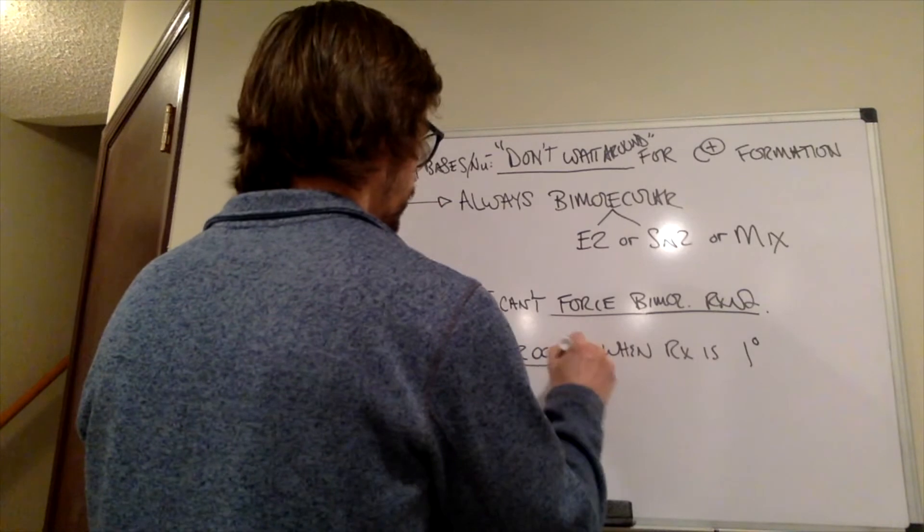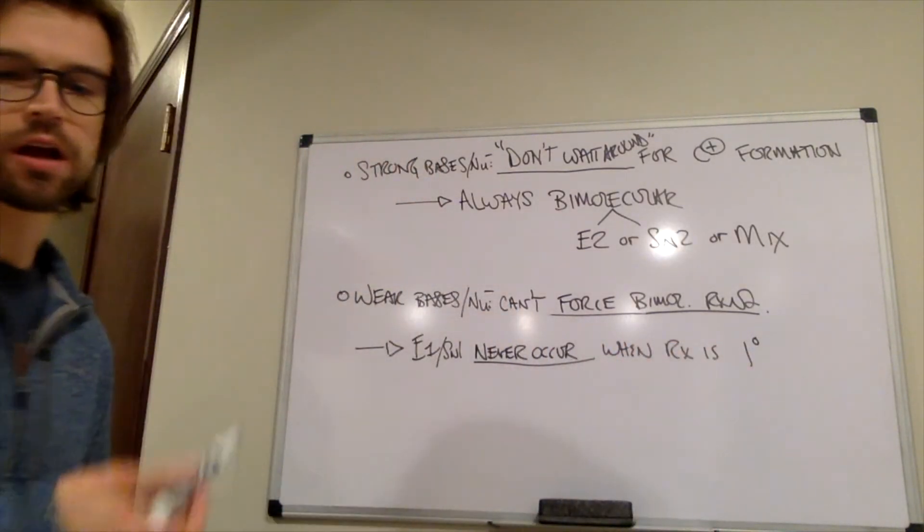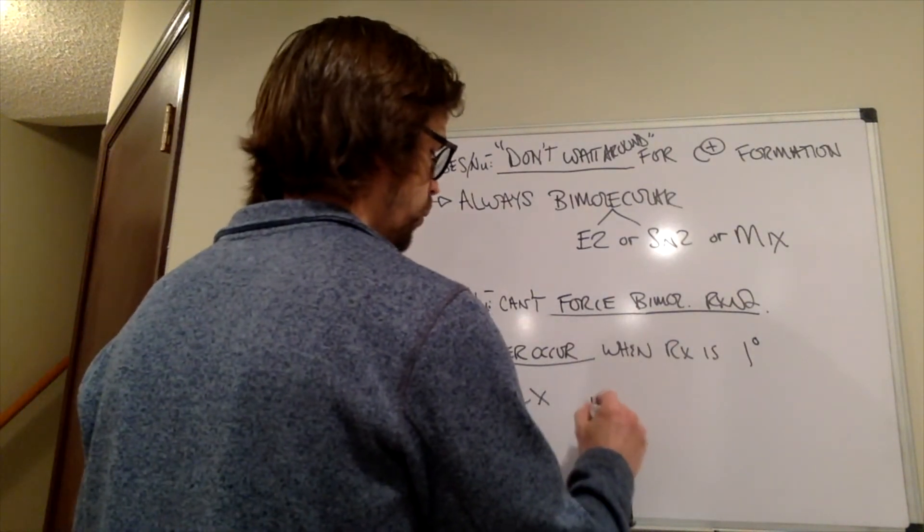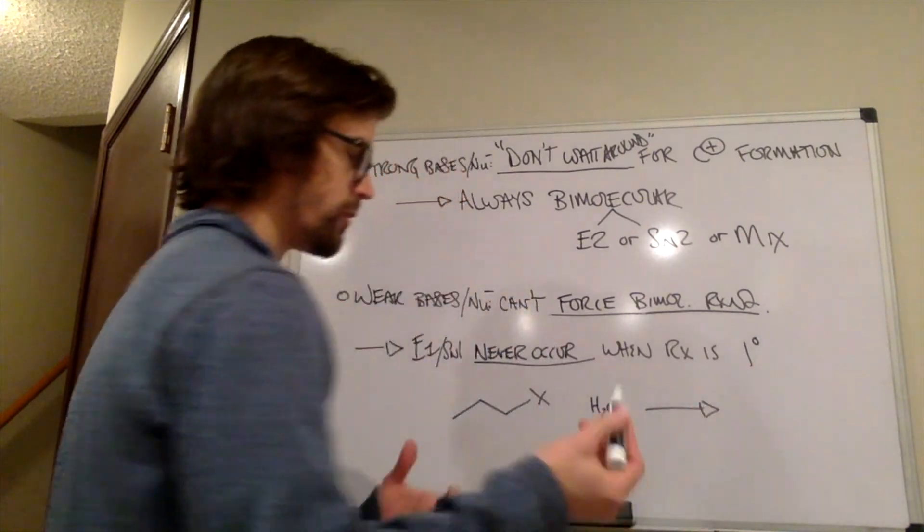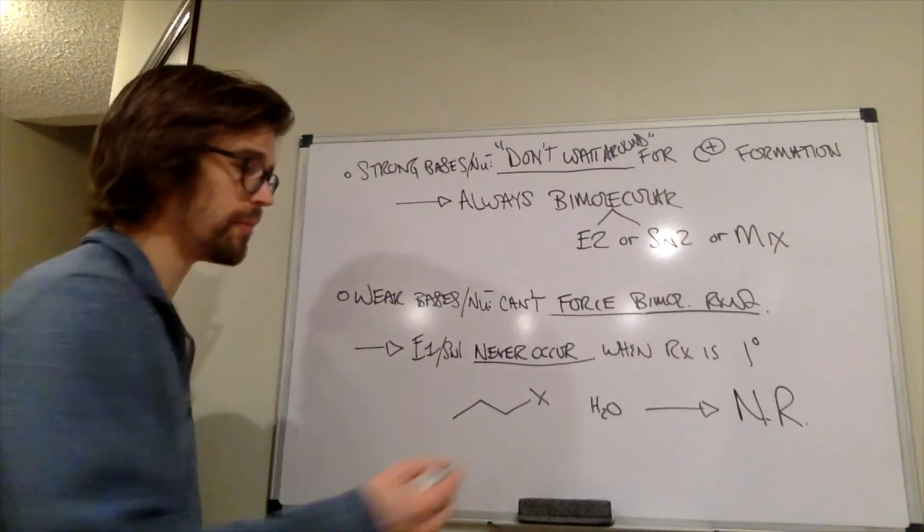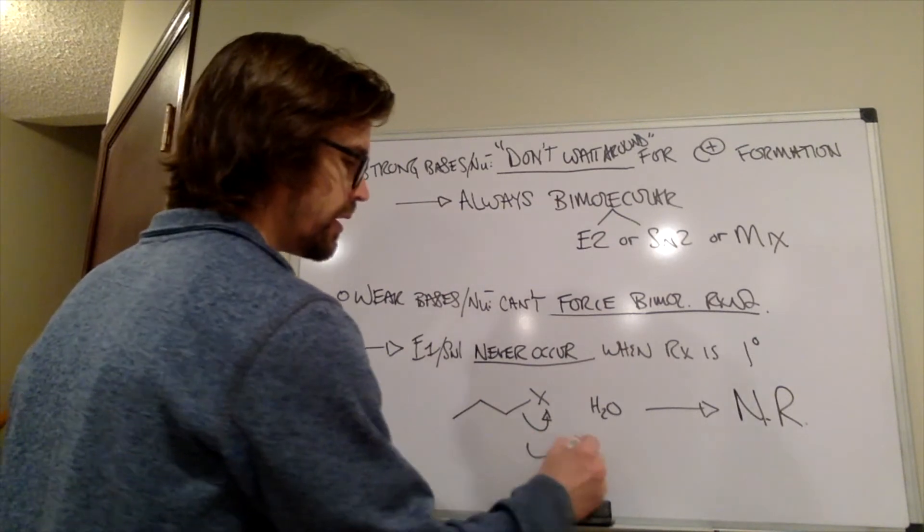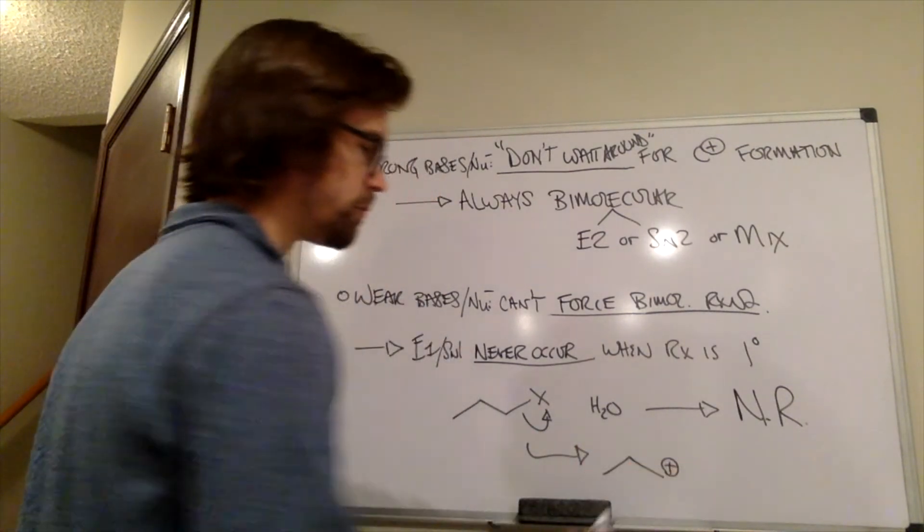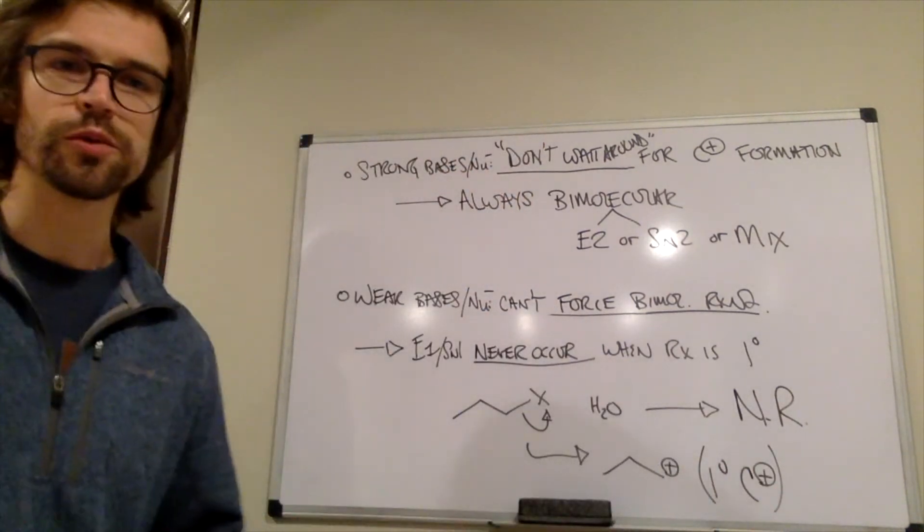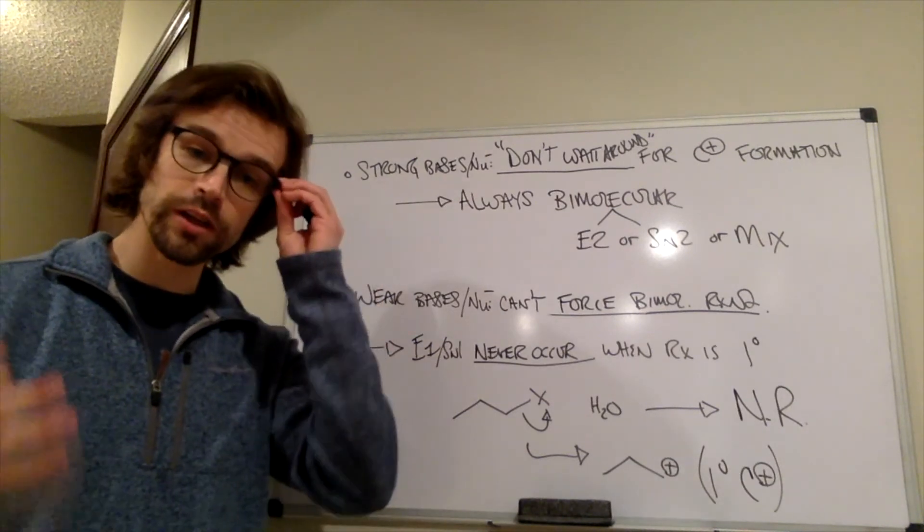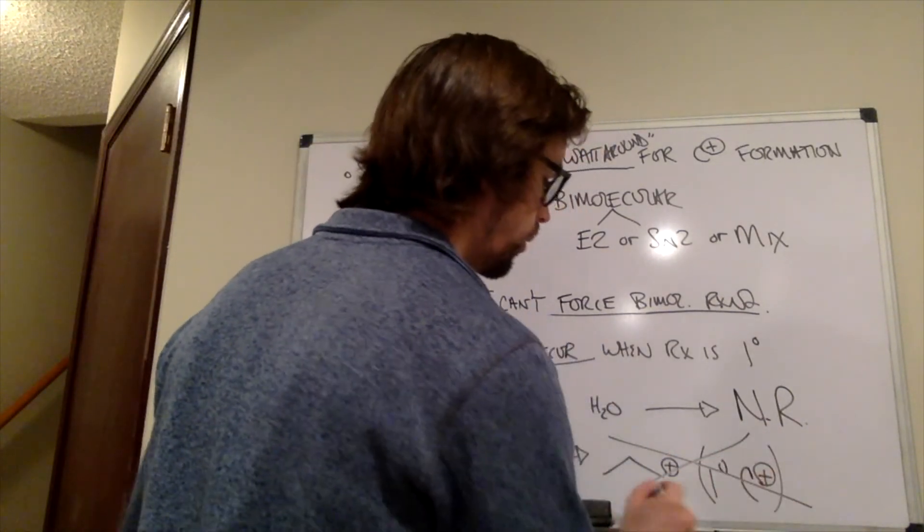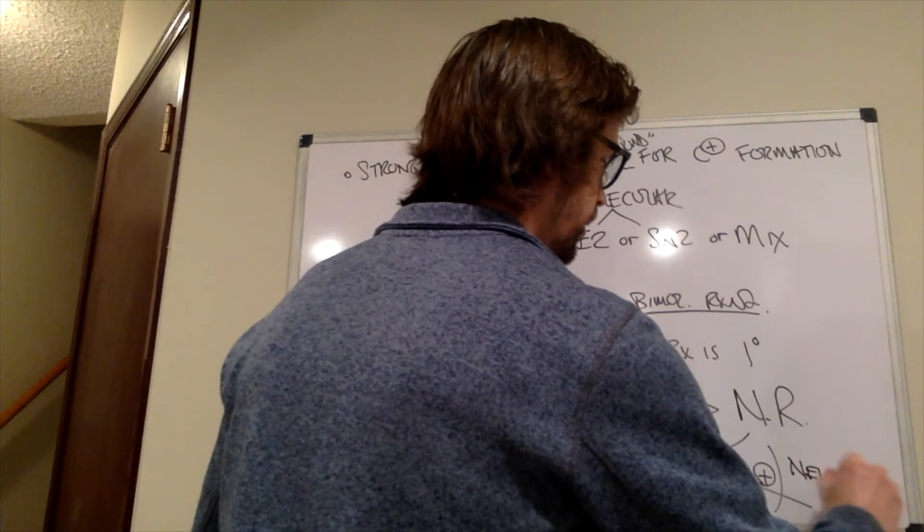Never occur when the alkyl halide is primary. Why was that again? Well, let's look at a primary alkyl halide. So if we had a primary alkyl halide like that, we have a weak nucleophile like this, the actual answer here is that this is going to be no reaction. If it was a reaction, what would be the first step? The first step would be the alkyl halide leaving. That would produce this. This is a primary carbocation. And the situation is primary carbocations are really reactive. They are really unstable. So they never form.